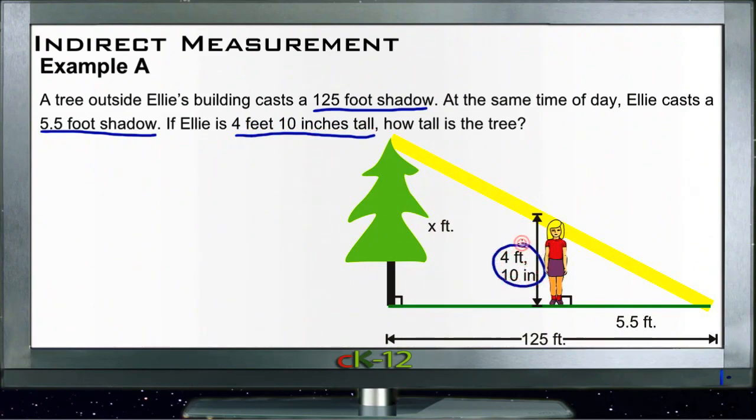Ellie's height is 4 foot 10, and Ellie's shadow length is 5 foot 5. The tree's height we don't know, and the tree's shadow length is 125 feet.